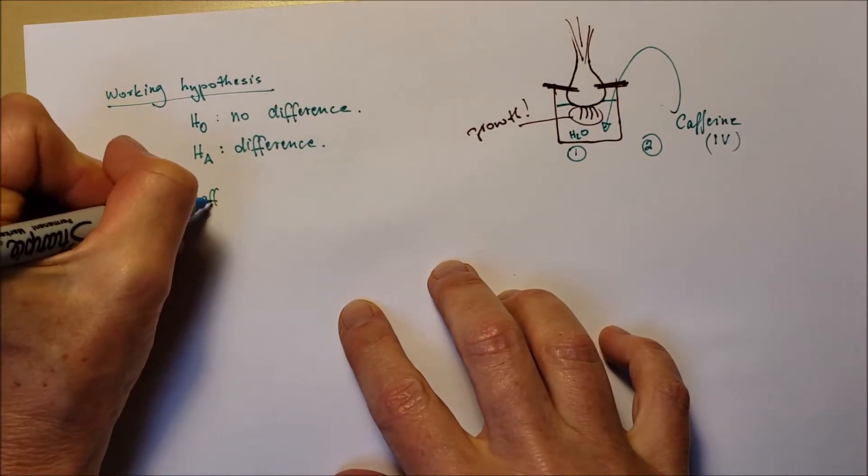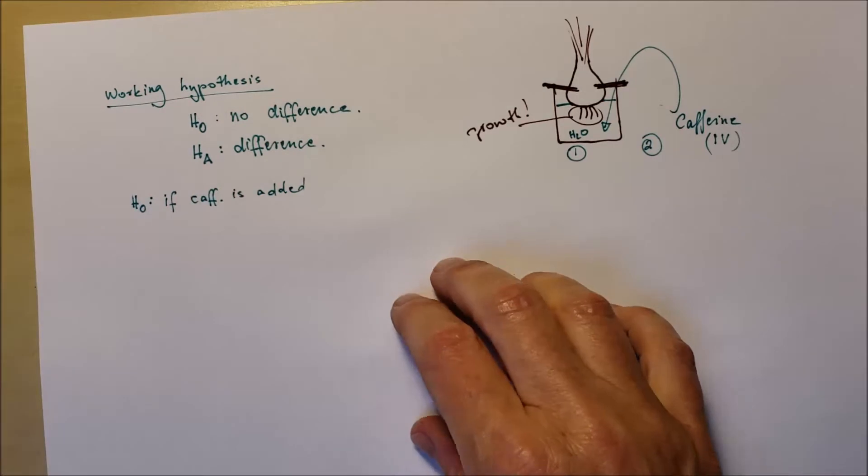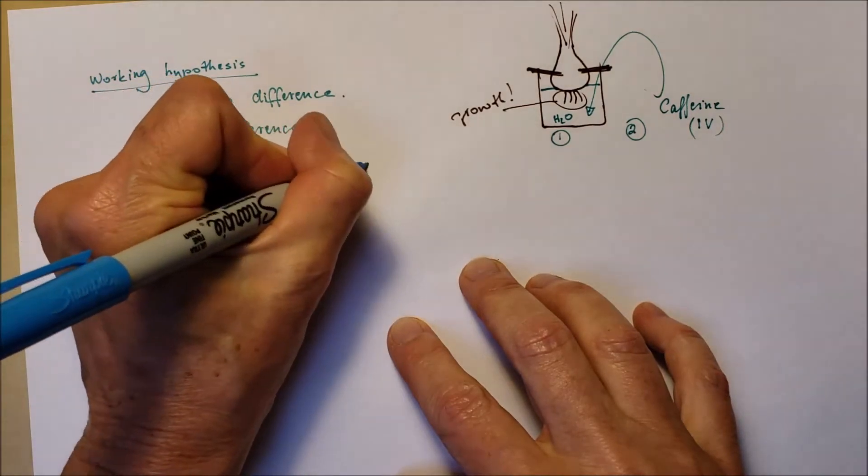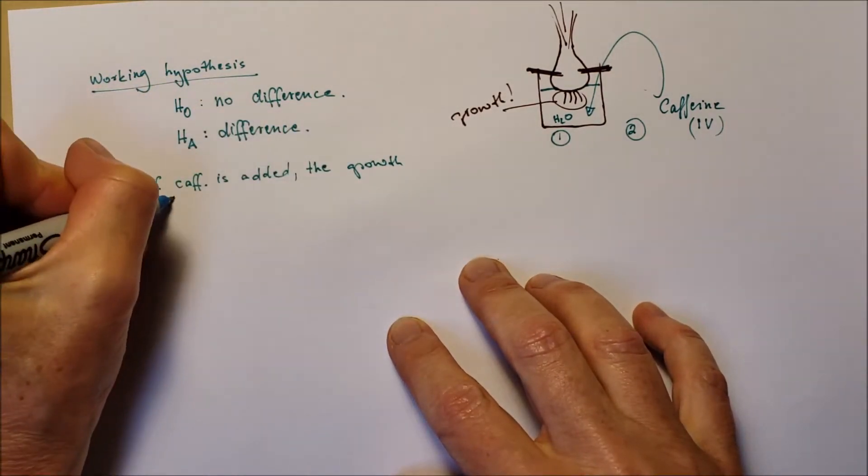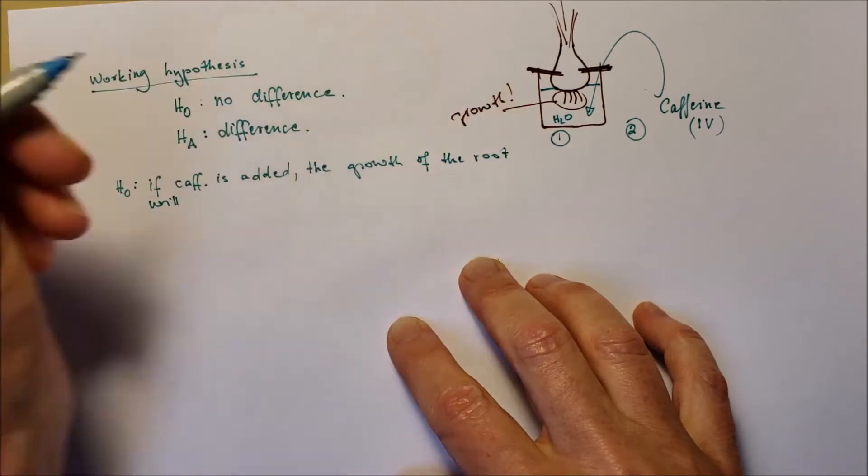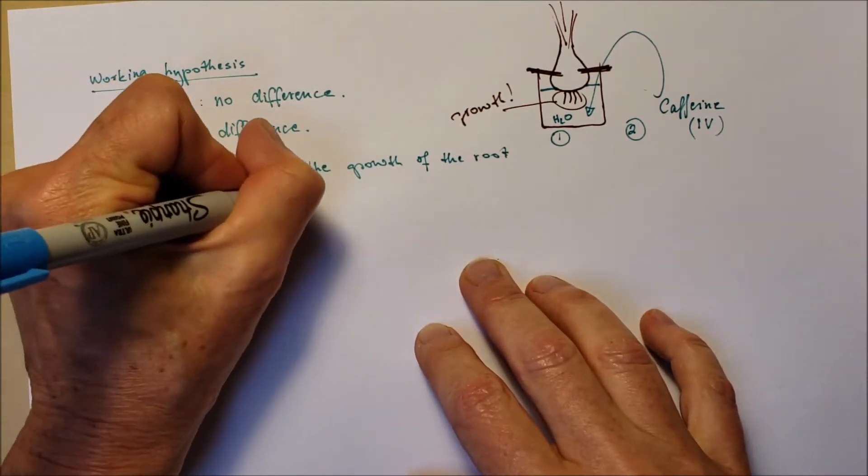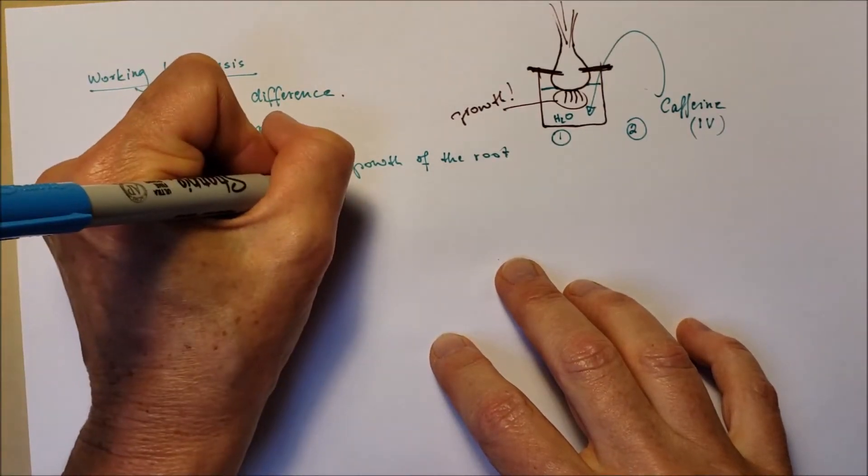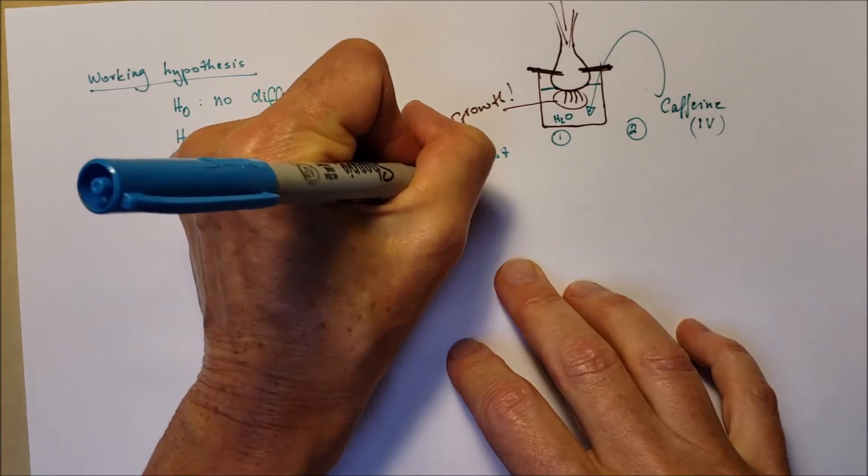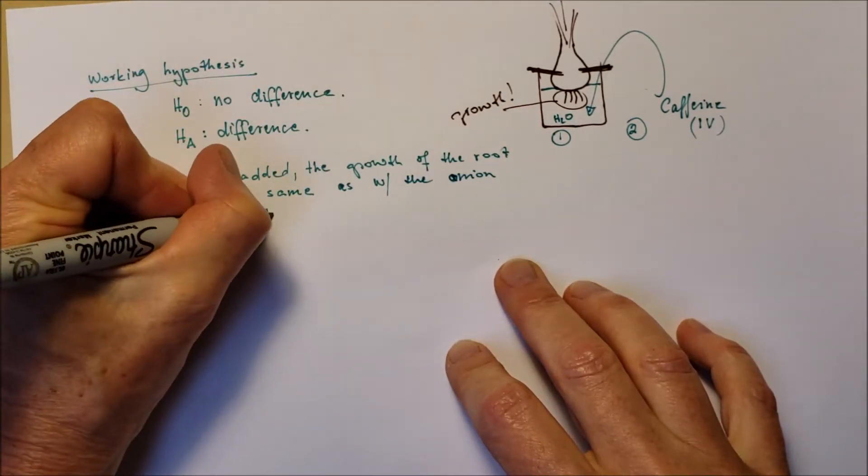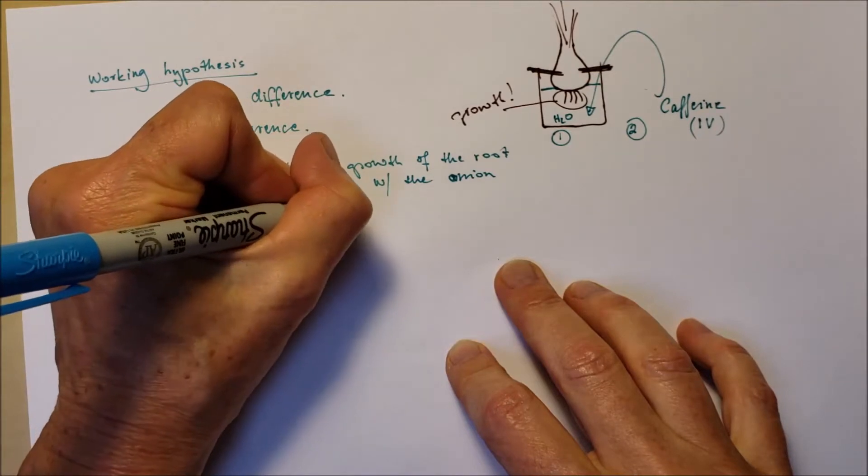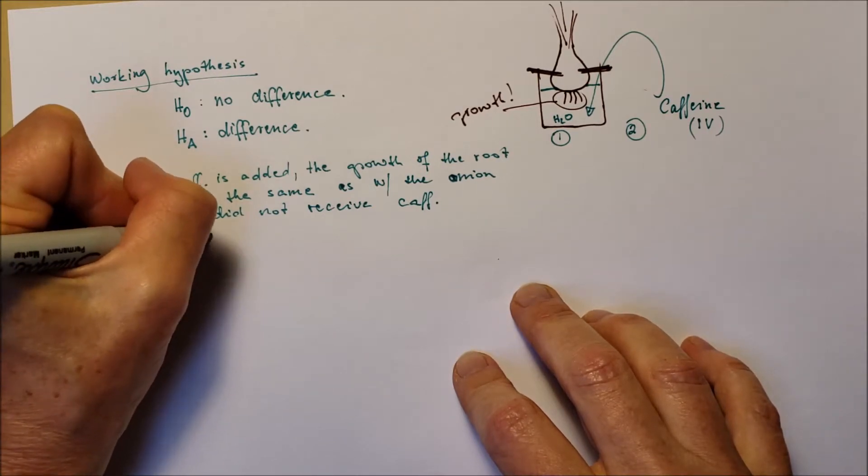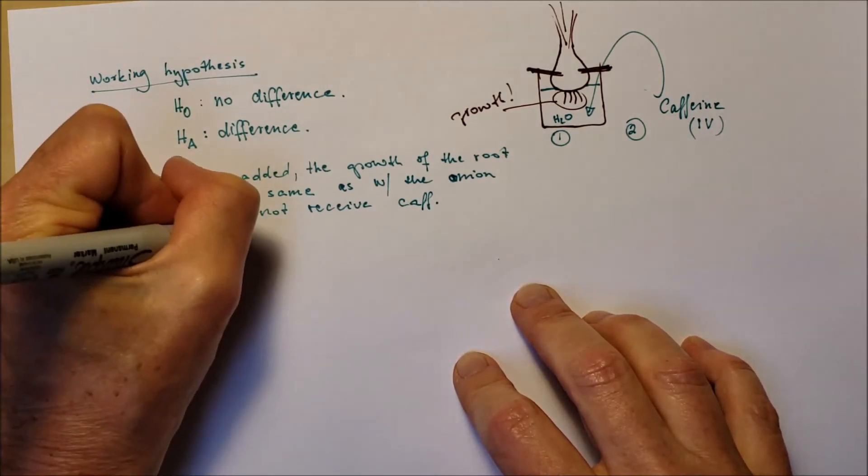So the null hypothesis, if we write it out, if caffeine is added to the water, the length of the root of the onion will grow the same amount as the other onion's root that received only water and no caffeine. So there's no difference between the length. So the difference is due to chance.